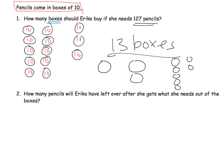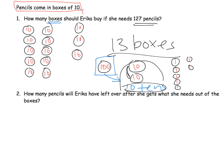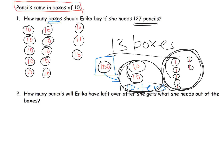Another way a student might have done it is using place value discs. They might say: this is a hundred, this is a 10, and this is a 10, and this is a 10, and then these are ones — 1, 1, 1, 1, 1, 1, 1. The student might use logic and say: this hundred can be cashed in for 10 tens. Then there are 10 tens plus 2 more tens, so that's 12 tens, plus we need one more for the remaining ones — so that's a 13th ten.